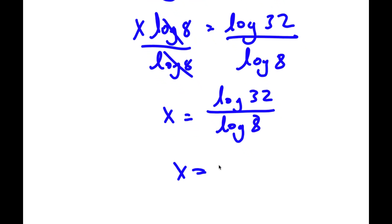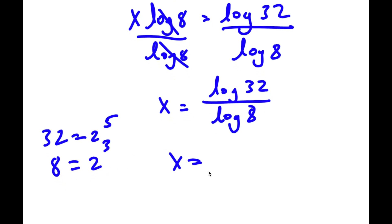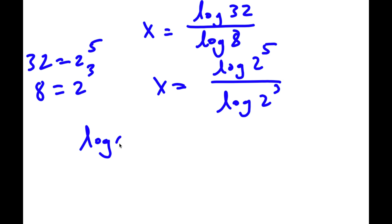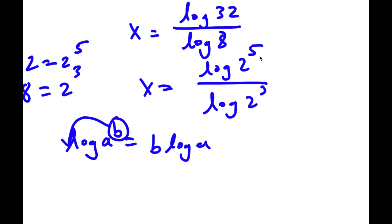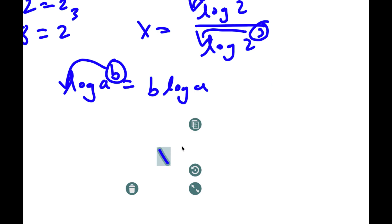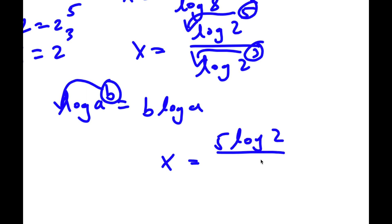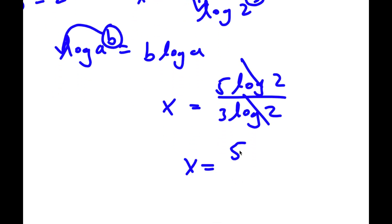Now 32 is 2 to the power of 5, and 8 is 2 to the power of 3. So I have log 2 to the power of 5 over log 2 to the power of 3. Applying the exponent rule, I move 5 to the front of the numerator and 3 to the front of the denominator, giving 5 times log 2 over 3 times log 2. The log 2 terms cancel out, leaving x is equal to 5 over 3.